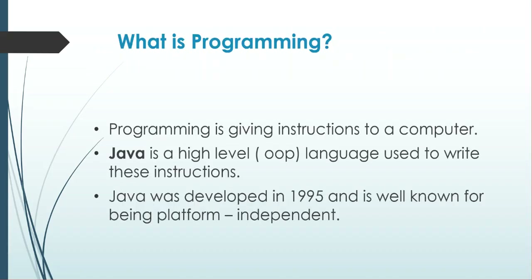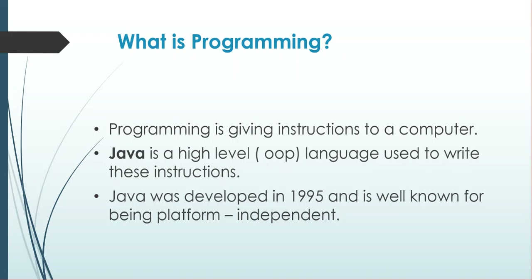What is programming? Programming is giving instructions to a computer. What is Java? Java is a high-level, object-oriented programming language used to write these instructions given to the computer. Java was developed in 1995 and is well known for being a platform-independent language.